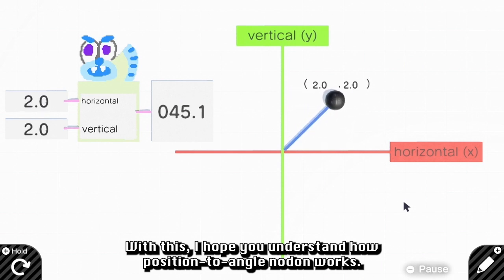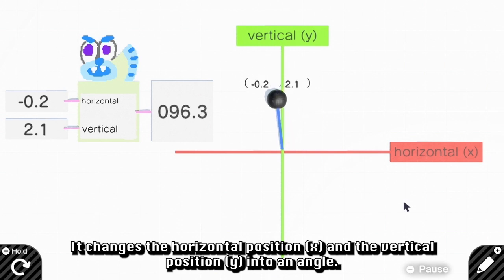With this, I hope you understand how position to anchor Nodon works. It changes horizontal position or X, and vertical position or Y into an anchor.